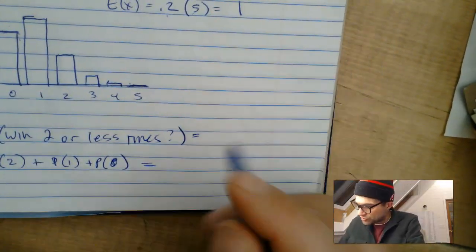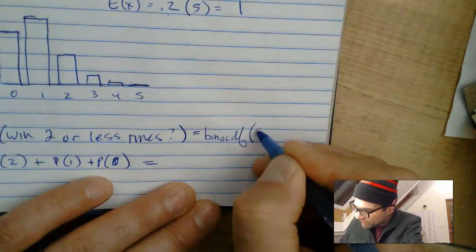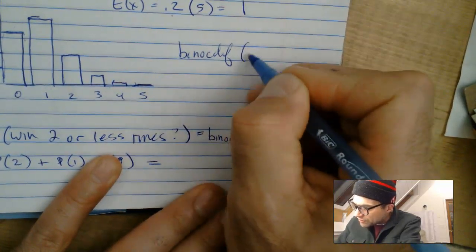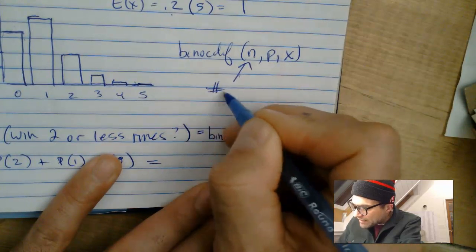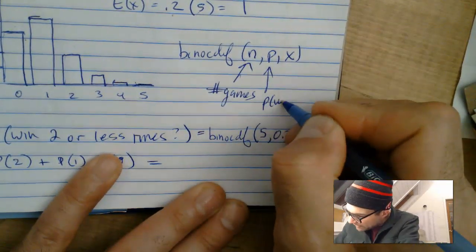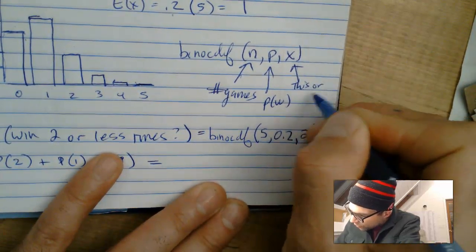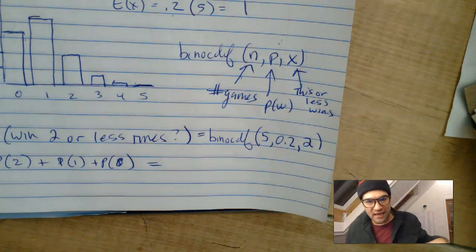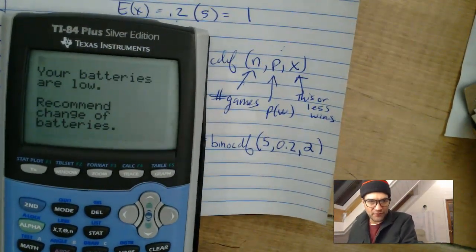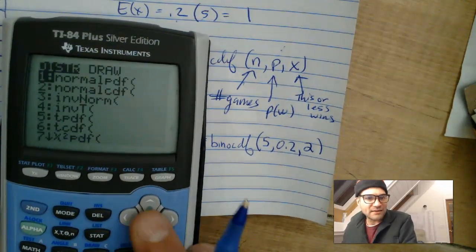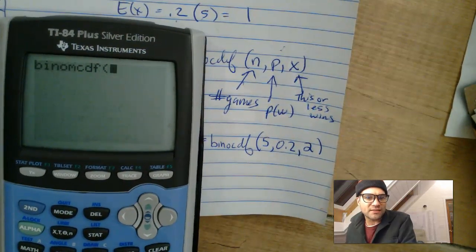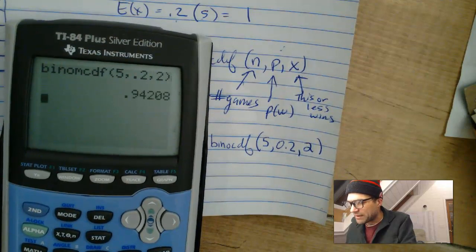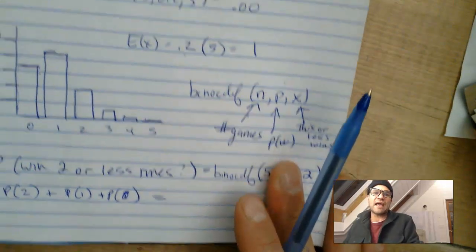BinoCDF does it for you. You just enter BinoCDF with five games, a probability of winning 0.2, and X equals two for two or less. BinoCDF still takes N, P, X — number of games, probability of winning, and X or less wins. Finding it on the calculator under Distr, go down to Bino, past PDF over to CDF: five games, probability 0.2, winning two or less gives you exactly 0.94.